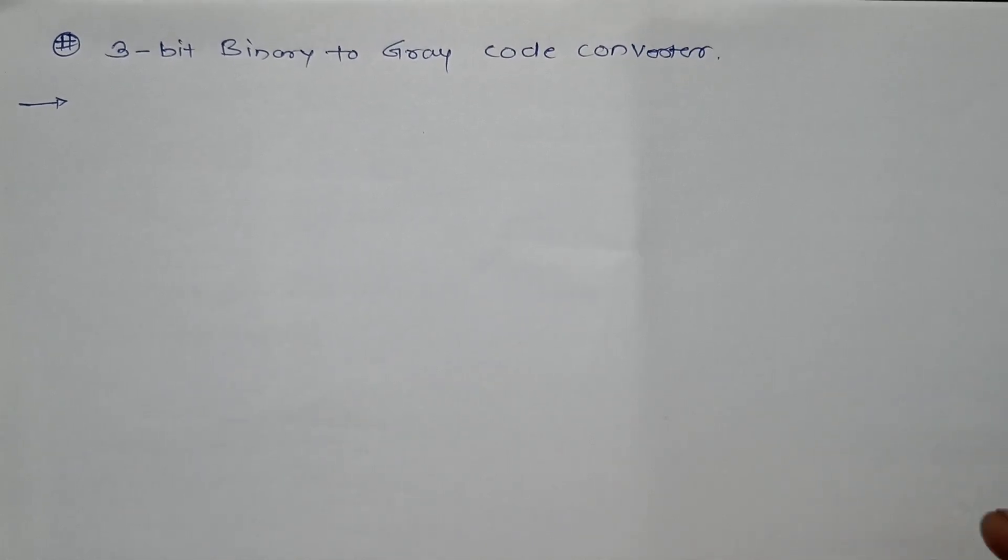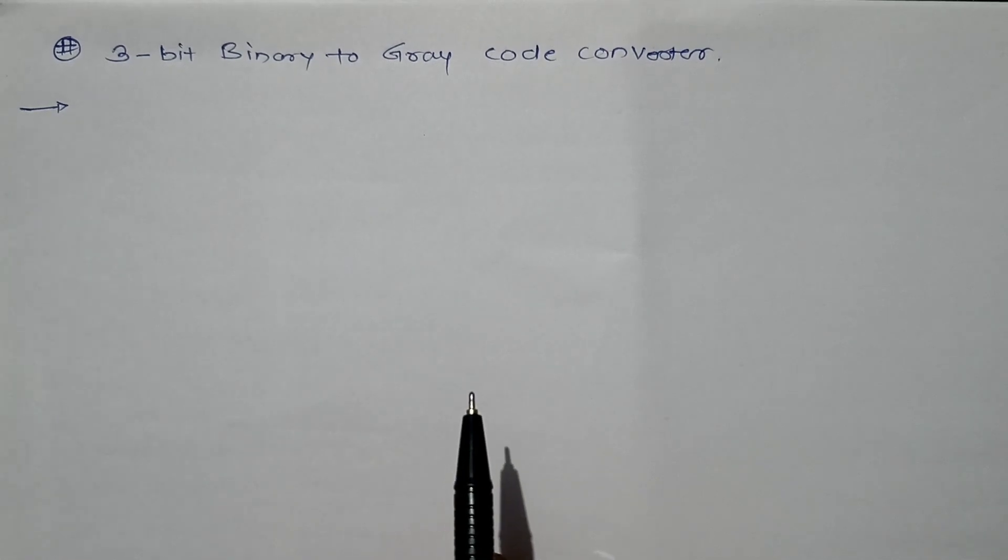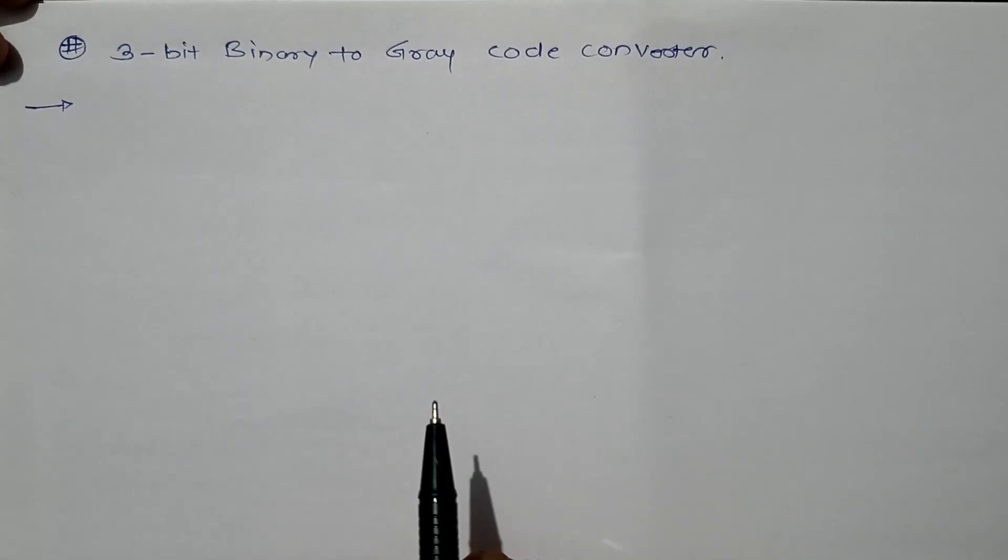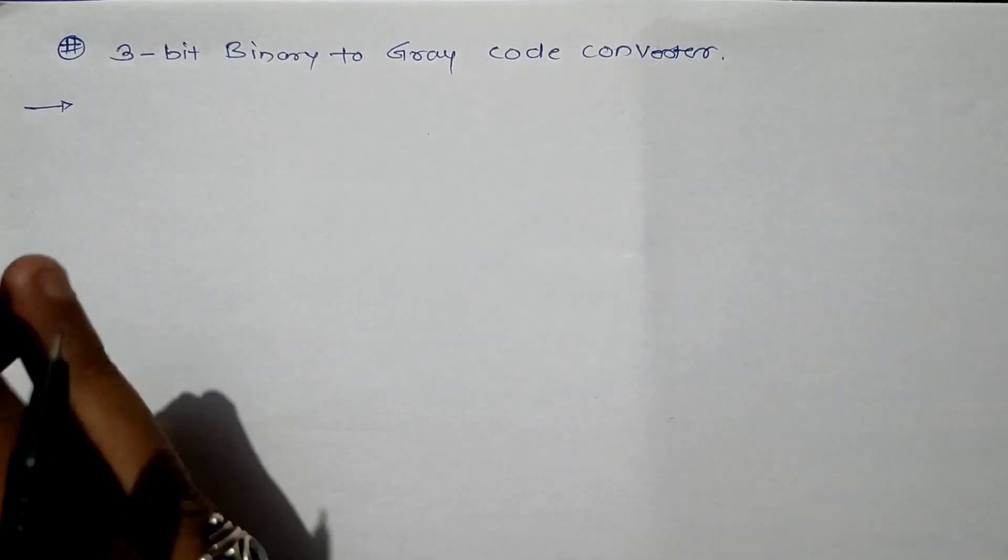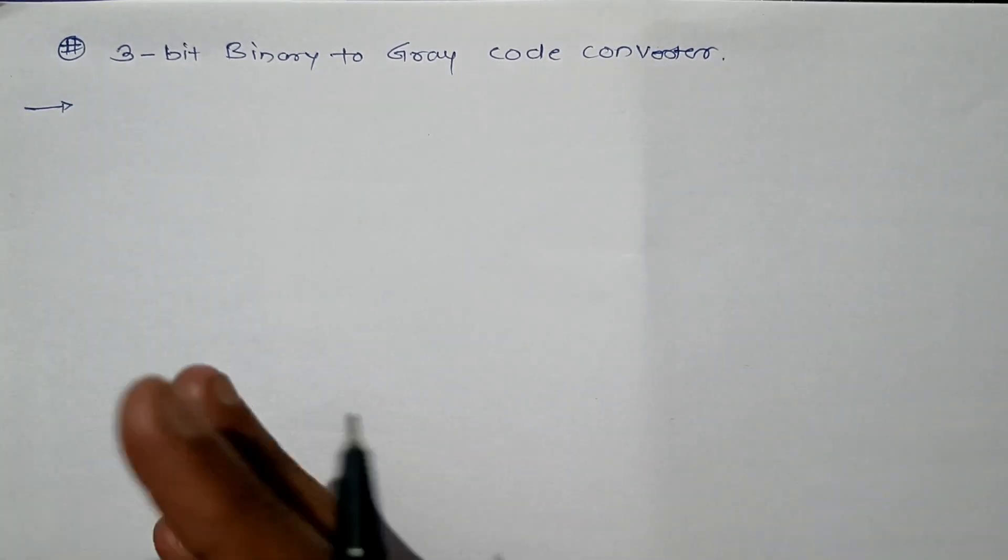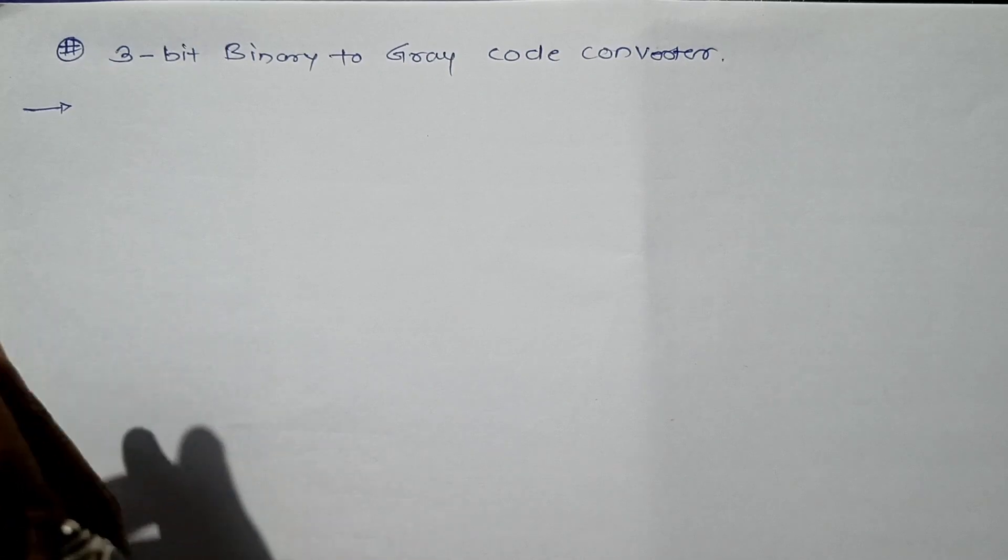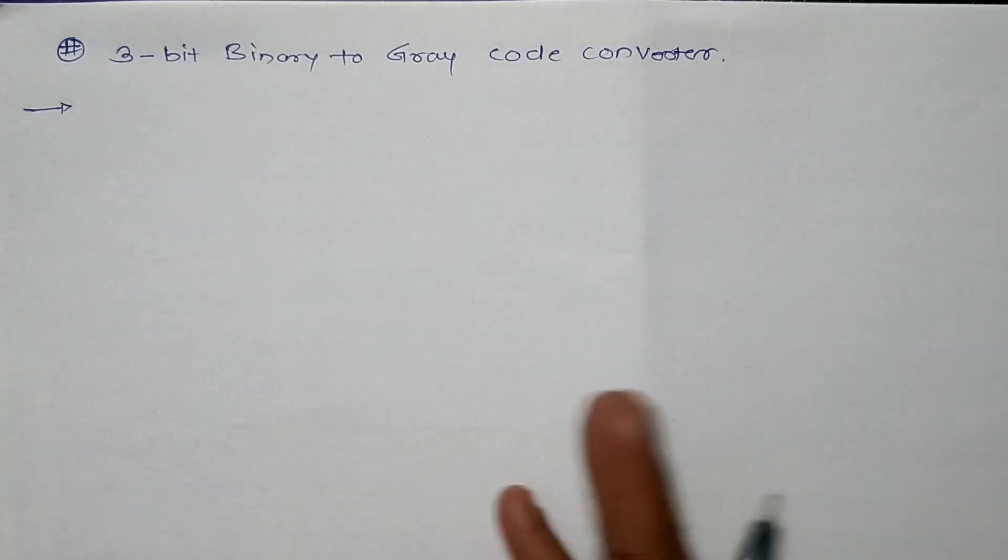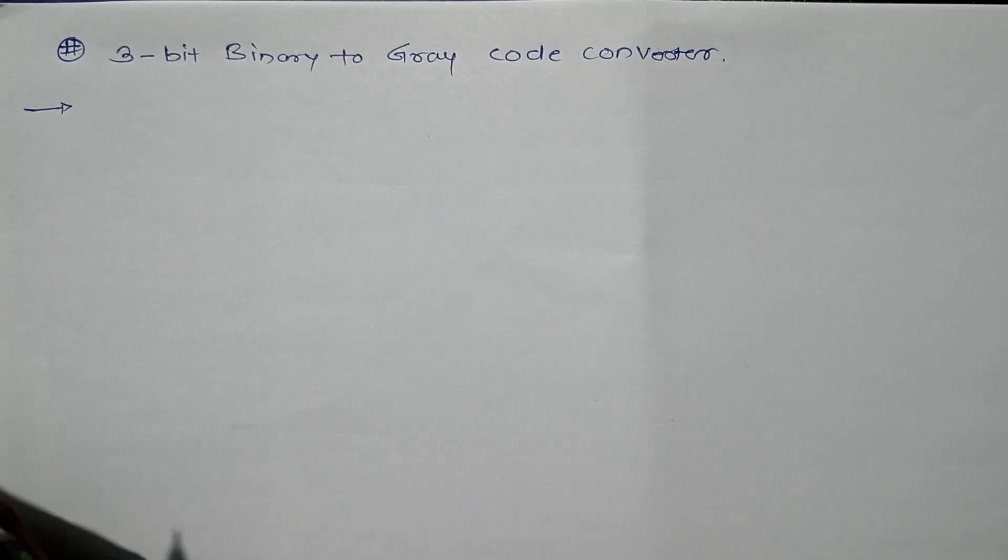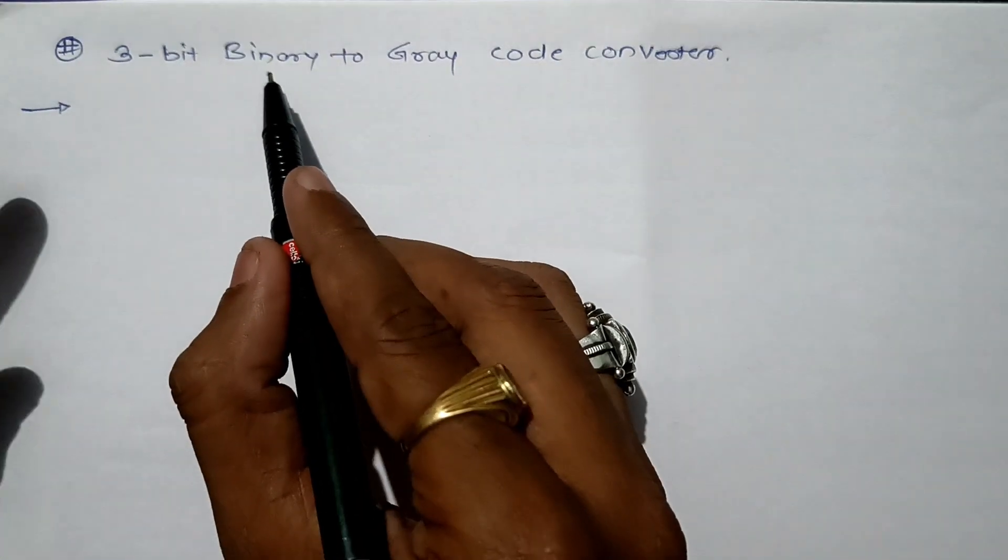Hello everyone, in this video we'll see how to design a 3-bit binary to gray code converter. In digital electronics we have several converters that convert certain kinds of binary information into either gray code or XS3 code, and they can be used to operate several machineries.